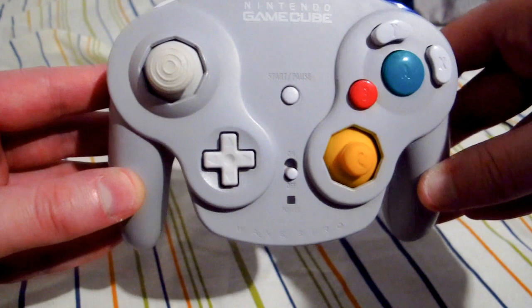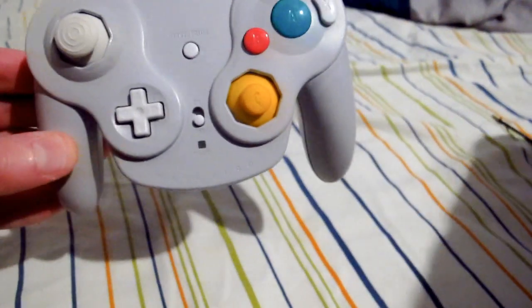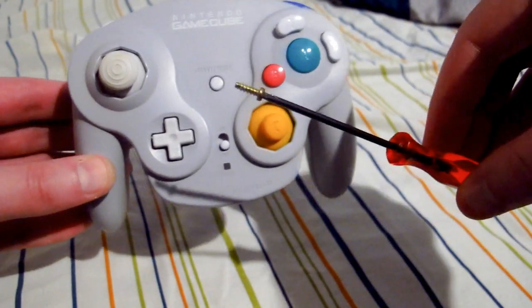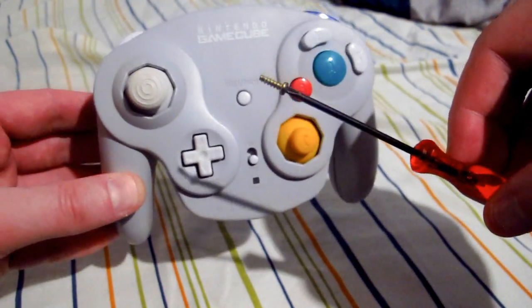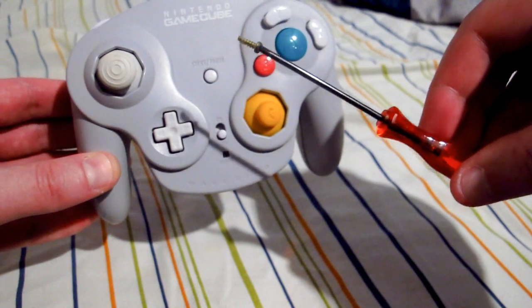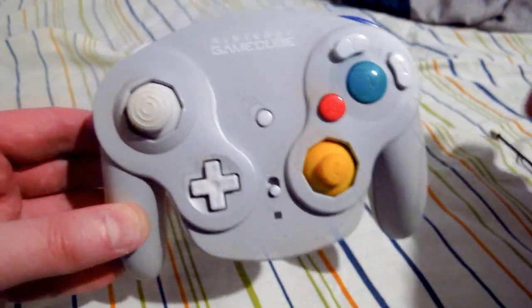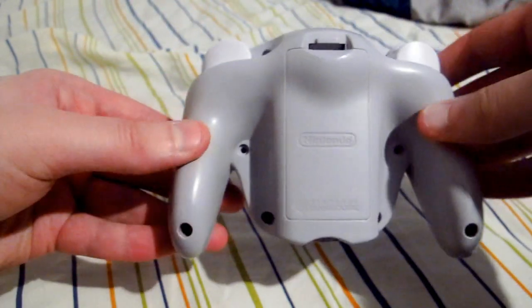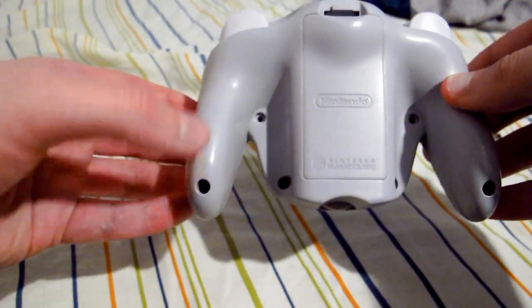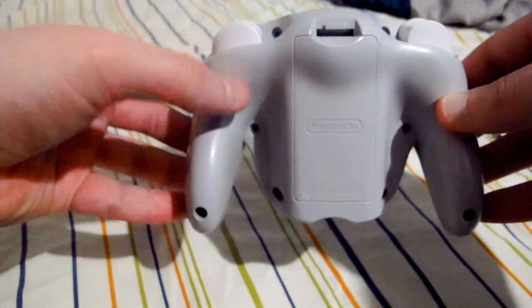To boot, what you'll need is a tri-wing screwdriver. You can get these a lot of places. I magnetized this one by rubbing a magnet across it and that's pretty much it. There are eight screws on the back of a GameCube controller, tri-wing screws.